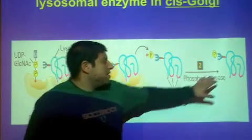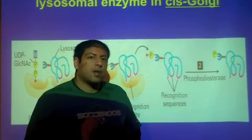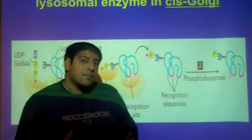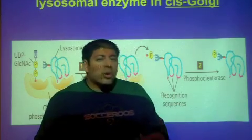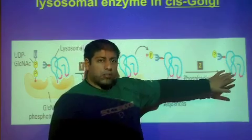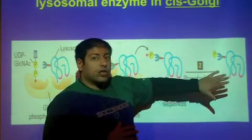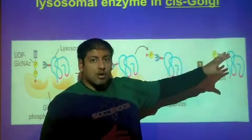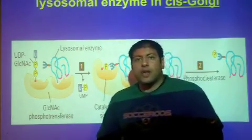So now you have this lysosomal enzyme with the M6P modification. This M6P modification is going to act as a signal sequence or a ticket in order to say that this protein, this now lysosomal enzyme, is destined to go to the lysosome where it needs to work and function.